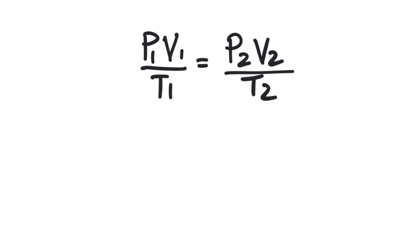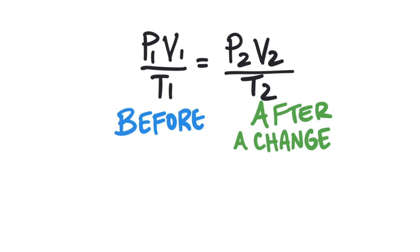This is showing the relationship between two sets of conditions. The before conditions are represented by the ones, and then after some change occurs, the conditions are represented by the twos. The V stands for volume, the P stands for pressure, and the T stands for temperature.